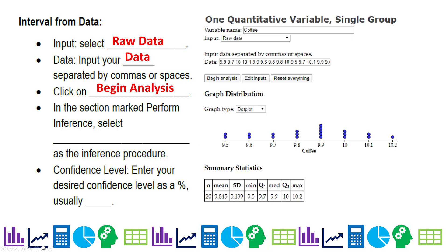Click on begin analysis as always. And then you're going to have to scroll down to the section marked perform inferences below these summary stats and select one sample T interval. For your confidence level, enter your desired confidence level as a decimal. It's typically 95%. So we'll do a quick walkthrough.